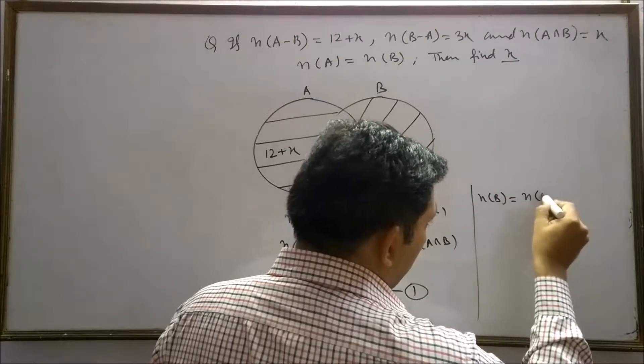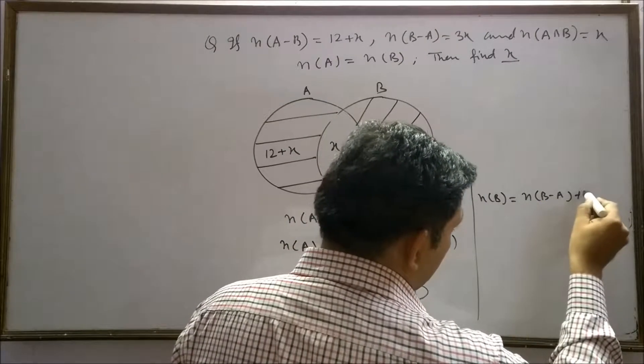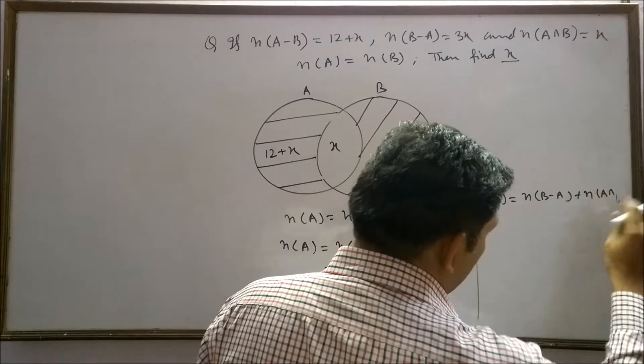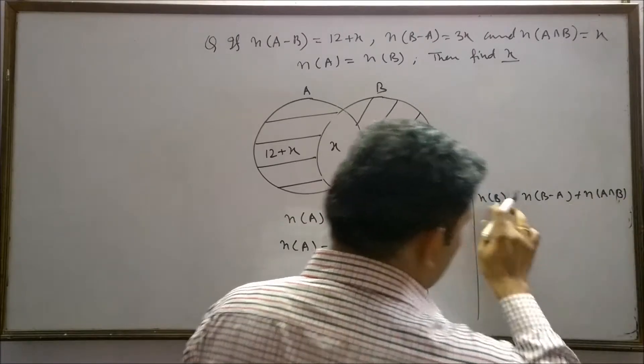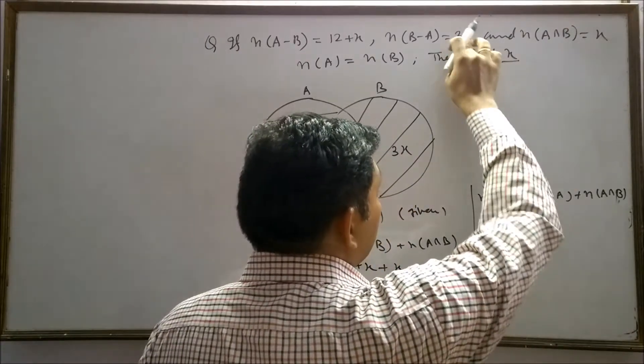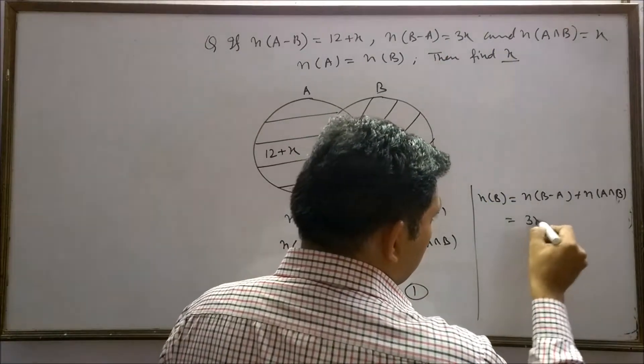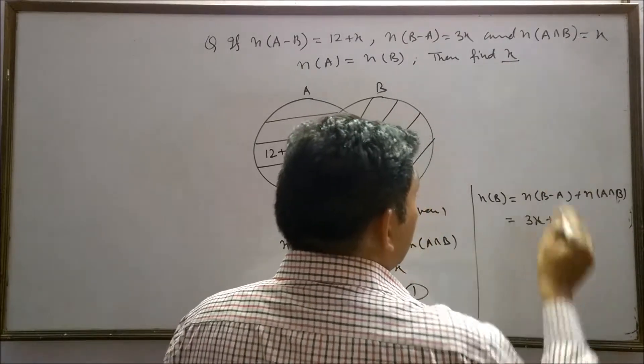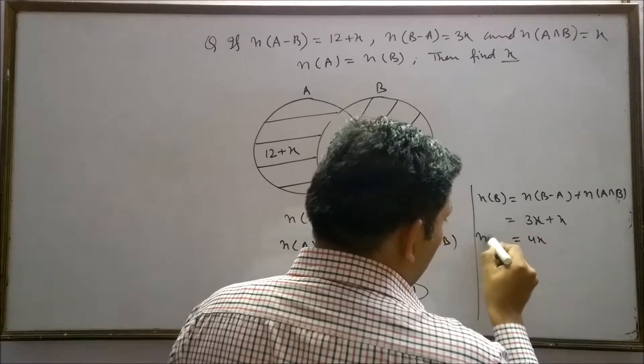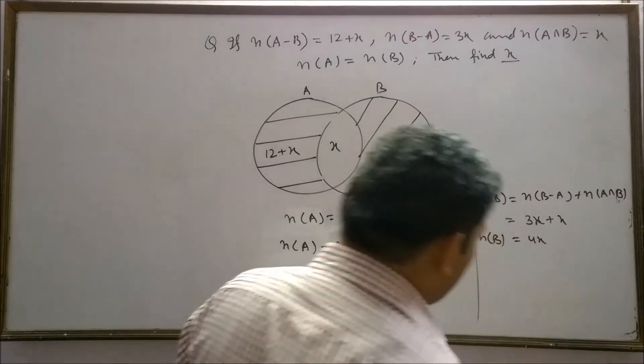Similarly, n(B-A) plus n(A∩B) is equals to n(B). Here, B minus A is 3x. A intersection B is x. It means n(B) is equals to 4x.